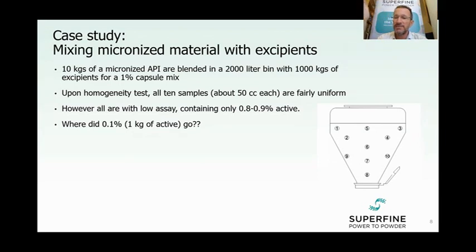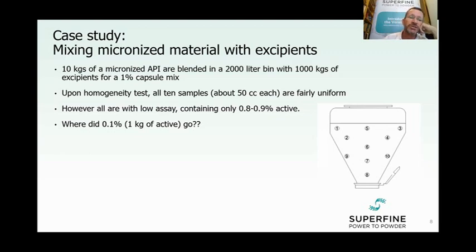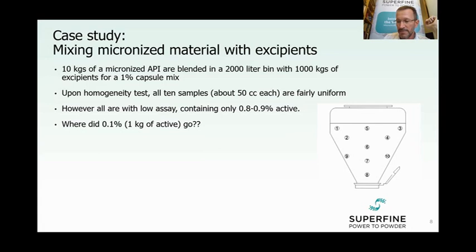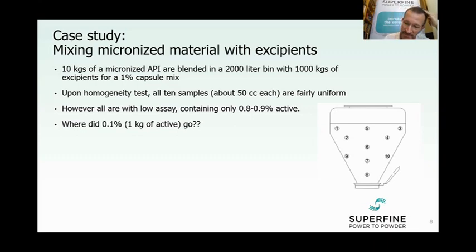This is very embarrassing — on one hand the material is uniform, but it's not correctly uniform. It's all not good enough: 0.8 or 0.9 percent is falling out of spec. So the big question is: where did we lose 0.1 percent of the material, which accounts for one kilogram of active? Where did it go? The first time I had a complaint like this from a pharmaceutical client, they told me something was wrong with the material. They said the blending process was perfect because the material was uniform, but they thought the material was being damaged in blending.